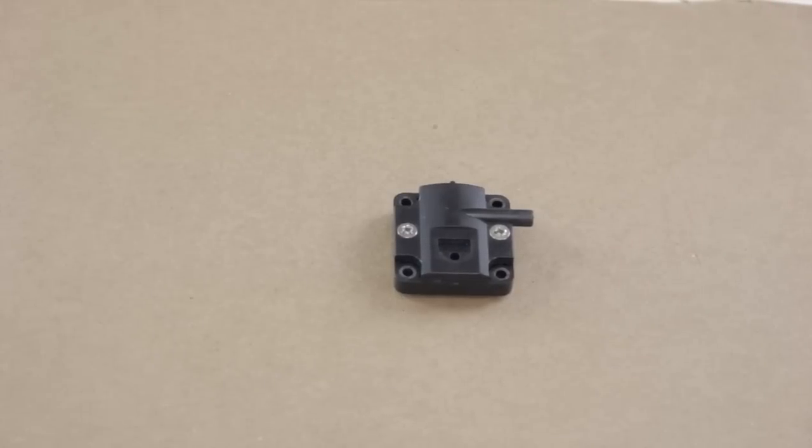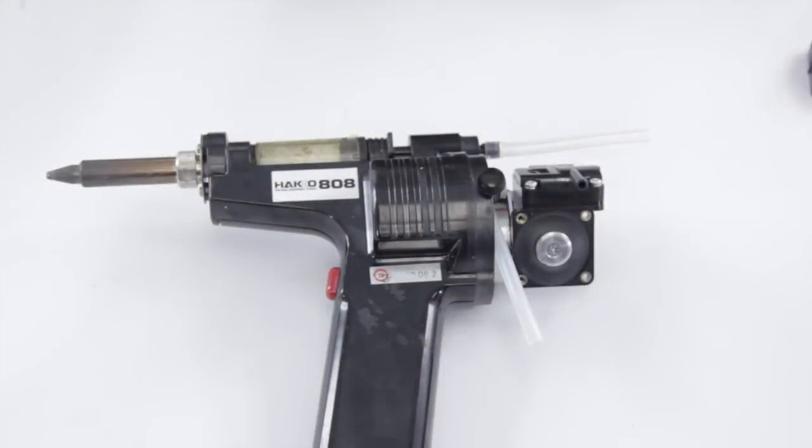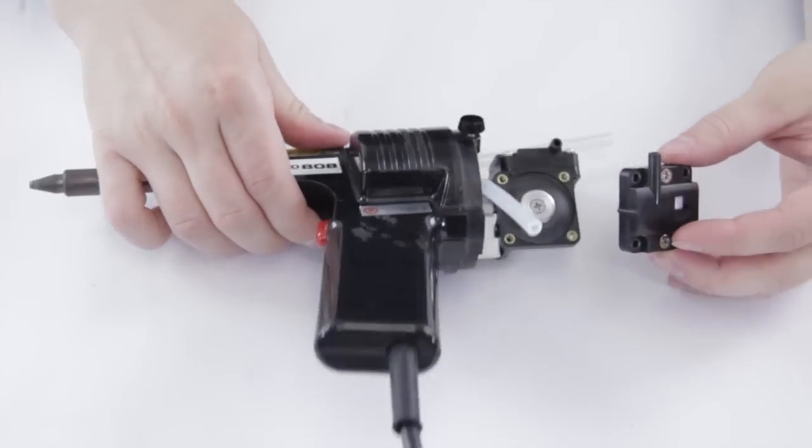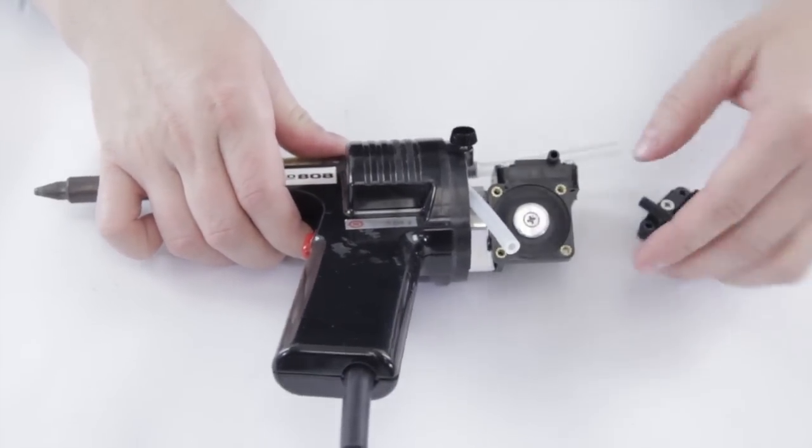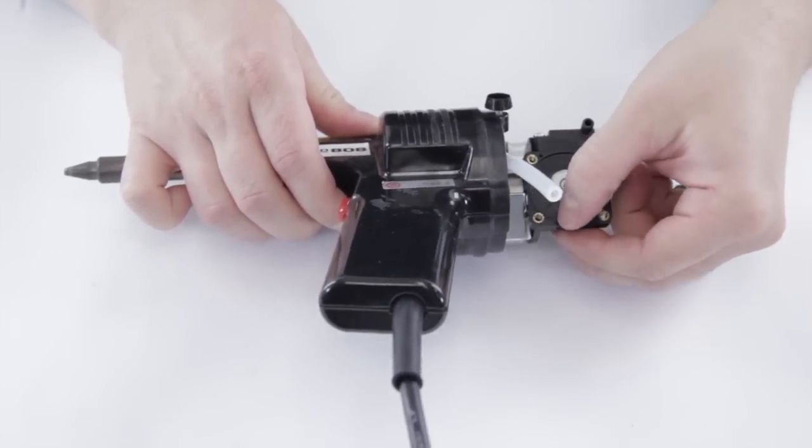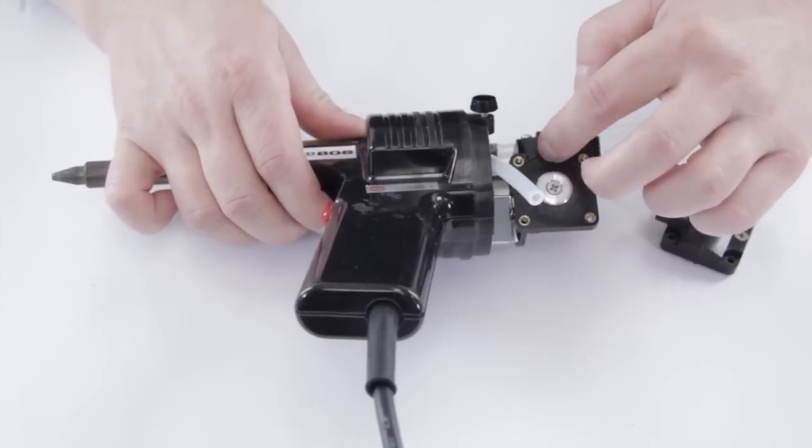Now we've got the valve housing back together, we can put that back onto the motor assembly. Now we've cleaned our housing, we can reassemble. We want to make sure that this little valve right here doesn't have any kinks in it.